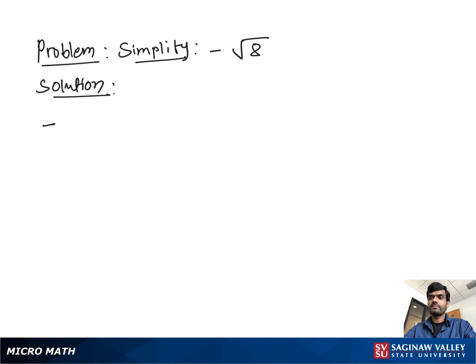Simplify negative square root of 8. The negative is outside, so it gives us a real number and we keep the negative sign as it is. Then we split 8 into two smaller numbers, one of which contains a perfect square.